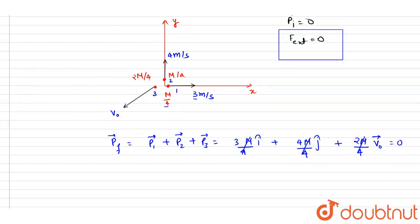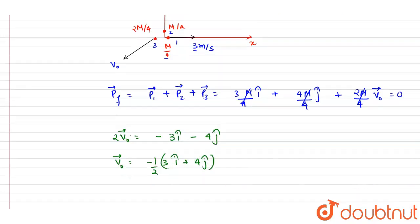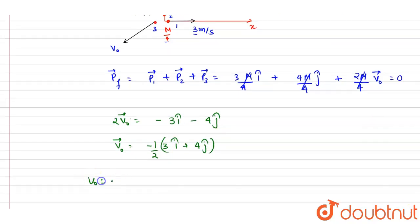And now we got this v naught. If you see this 2v naught, if you send the other term on the other side, it will be minus 3 i cap minus 4 j cap. Right, so v naught is equal to minus, it will be half, 3 i cap plus 4 j cap. Now you can get the magnitude of it.